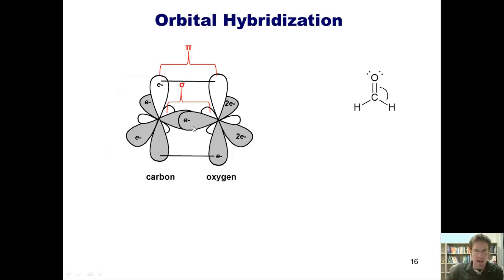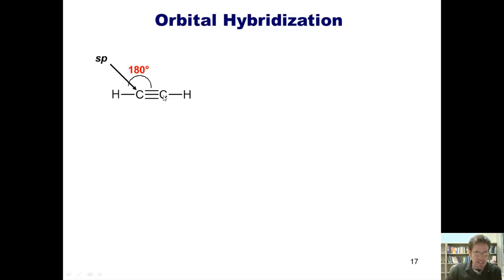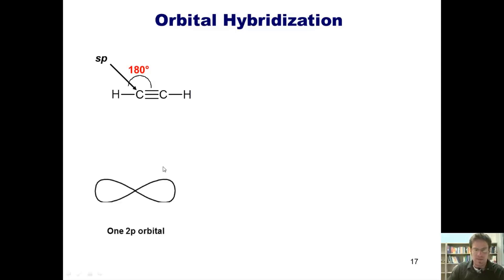At this juncture the hydrogens can come in, overlap with these orbitals in the carbon atom, and form this molecule we have right here. Now let's do the same process for an sp hybridized molecule, which has a 180 degree bond angle. The fact that these carbon atoms are sp hybridized implies they've used up their s orbital and one of their p's, and they've left the other two p's unused in hybridization.